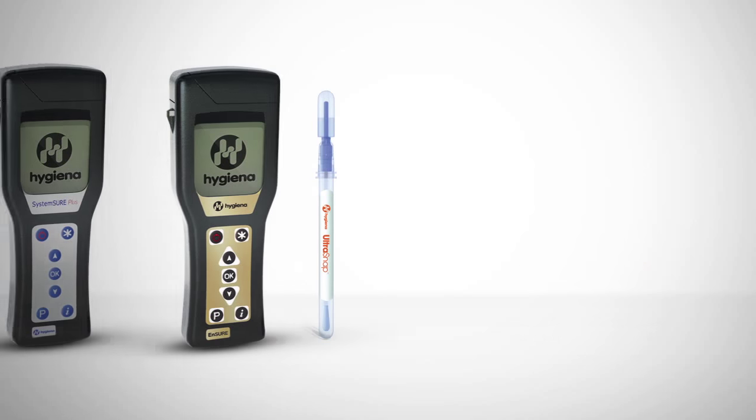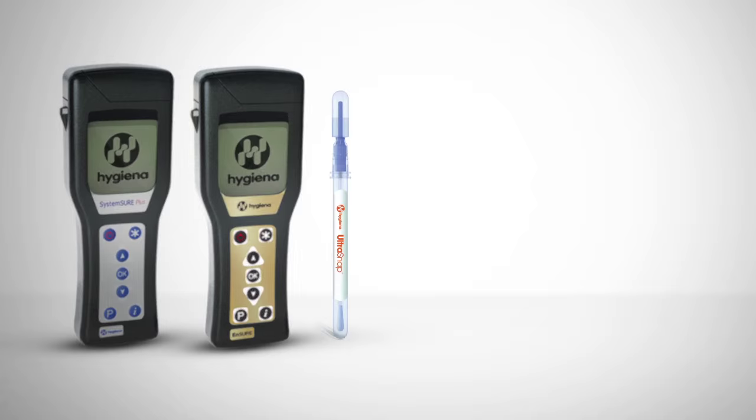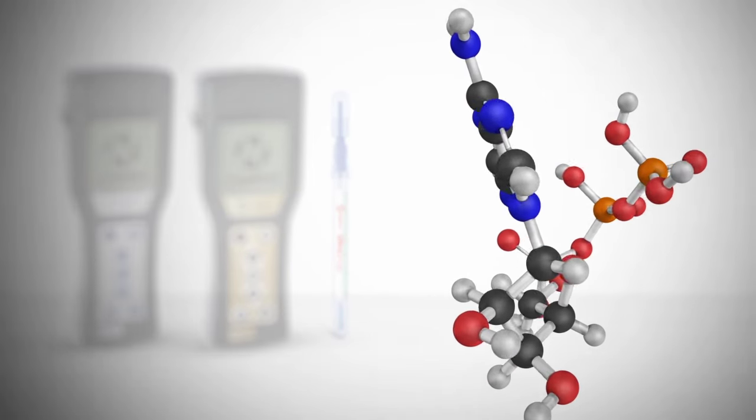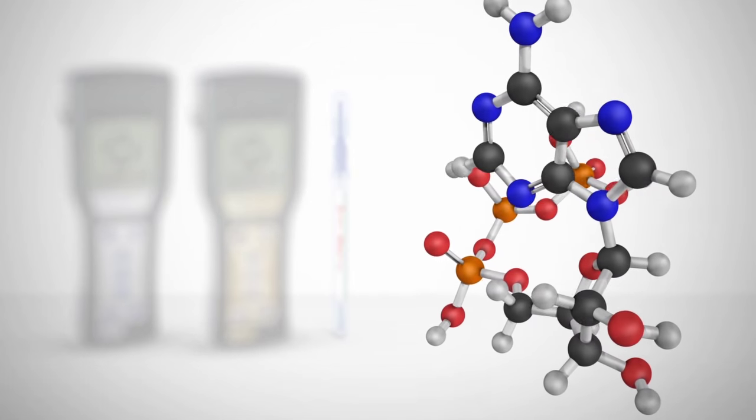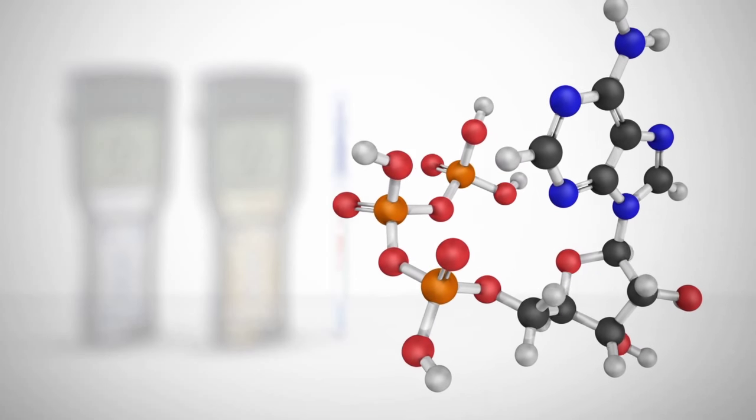Together, UltraSnap and Hygiena's handheld meters measure the ATP present in a sample. ATP is the energy molecule found in all living cells, and the presence of ATP signifies whether or not a surface is clean.